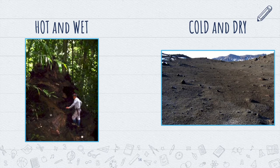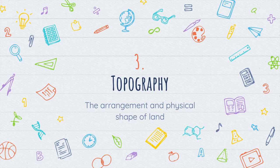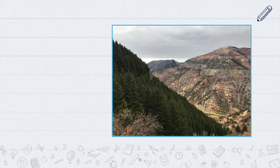As I mentioned, temperature and moisture play a major role in soil formation. One factor that can influence temperature and moisture is topography. Topography is the arrangement and physical shape of the land. Topography's influence on temperature and moisture actually has a lot to do with the sun.